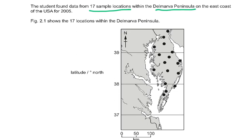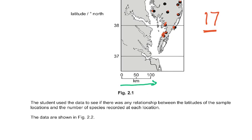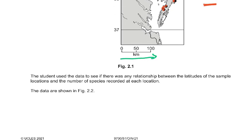Figure 2.1 shows the 17 locations within the Delmarva Peninsula. On the x-axis we have kilometers and then we have the latitude, and you can see how they have plotted all the points. The student used the data to see if there was any relationship between the latitude of the sample locations and the number of species recorded at each location. The data was shown in figure 2.2.